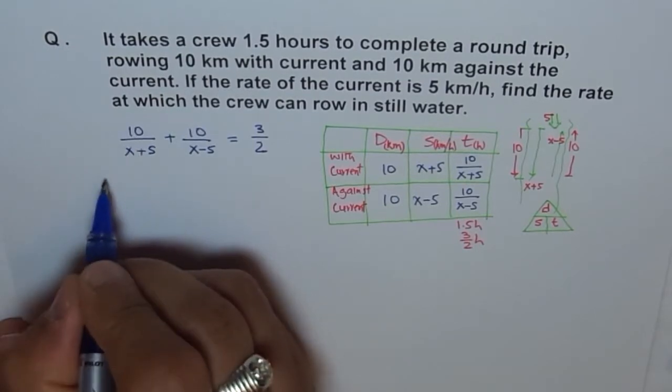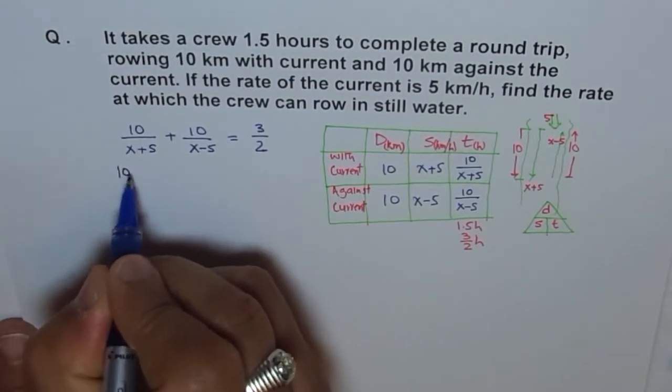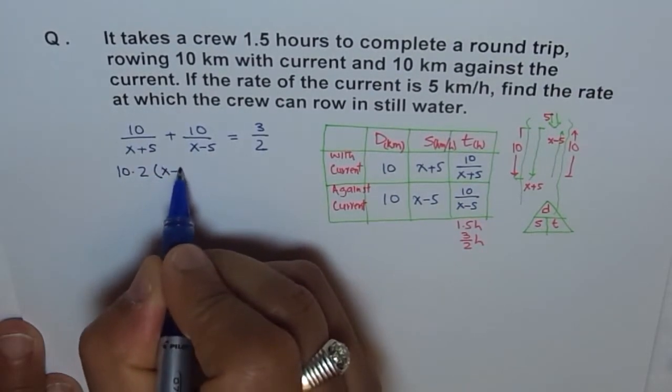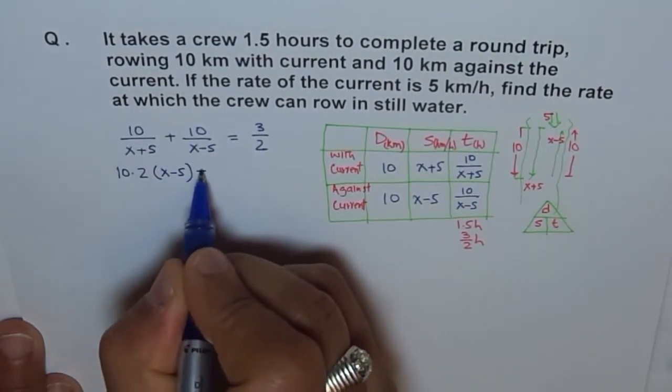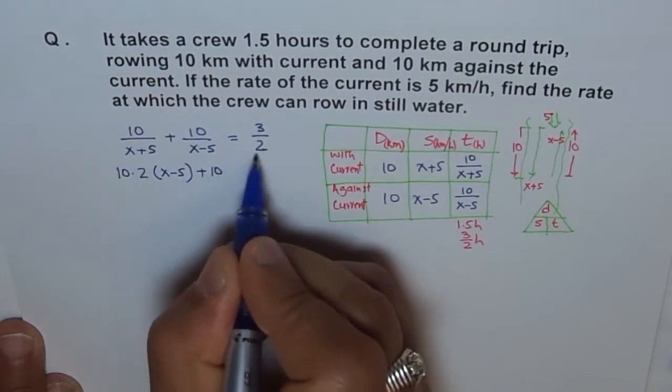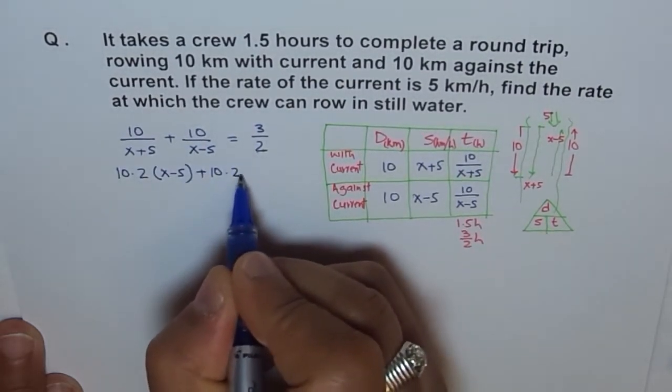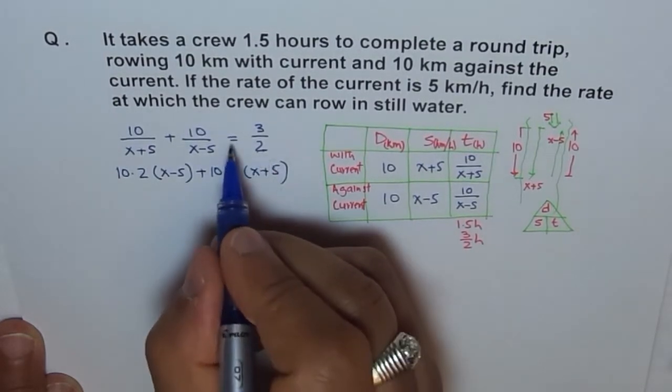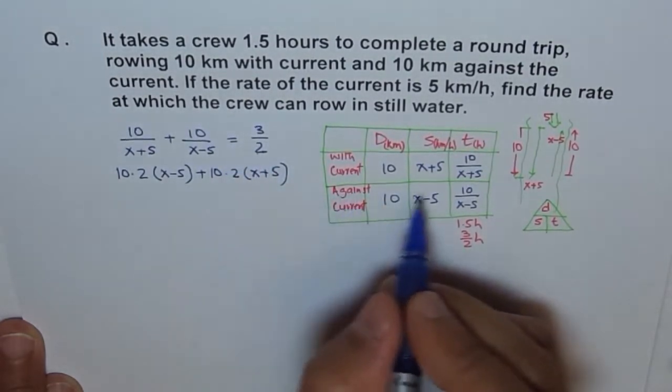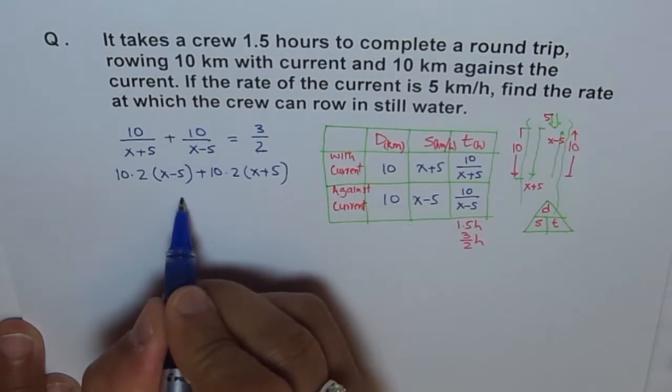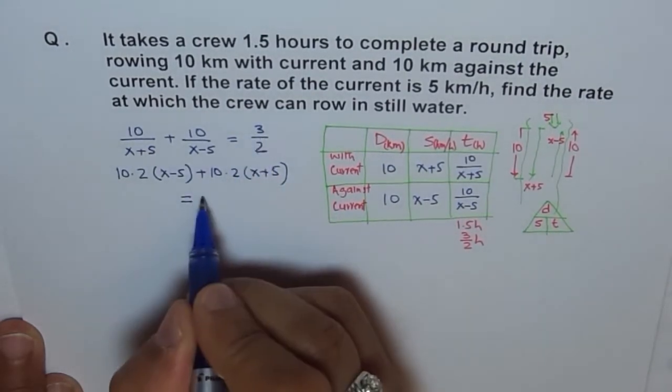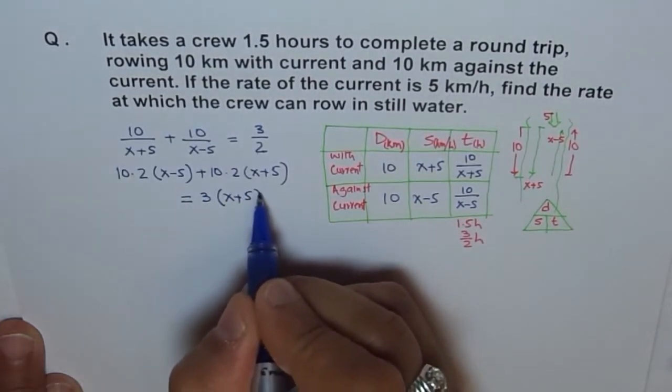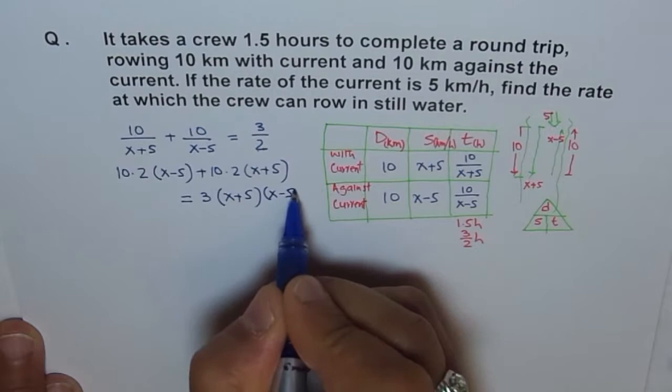So, we'll do straight away like that. So, we'll say 10 times, no, I'll write 10 times 2 times X minus 5. Does it make sense? Here it is. And plus 10 times this two times X plus 5. Correct? Is equal to, I'm running out of space here. So, I'm just writing here, equals to 3 times X plus 5 times X minus 5.